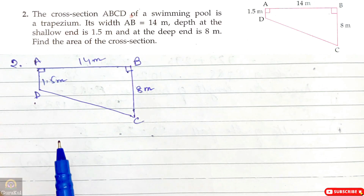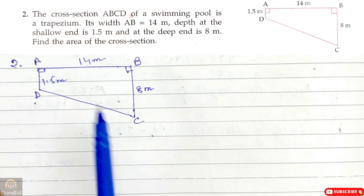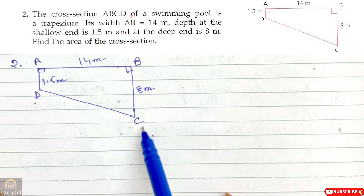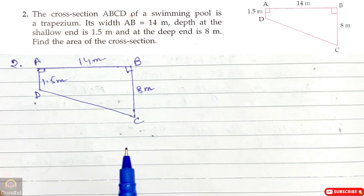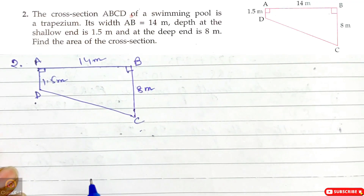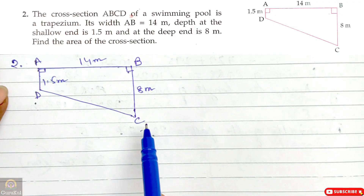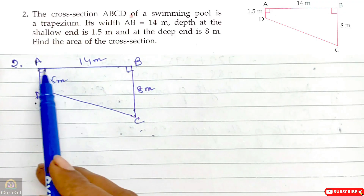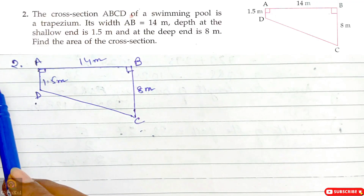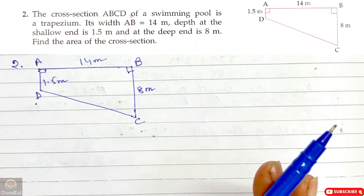In a trapezium, two sides are parallel. Here A, D and B, C are parallel. If we extend line D, C and line A, B further, they would meet at a point — so A, B and D, C are not parallel. Also, angles A and B are 90 degrees each, making them co-interior angles between A, D and B, C. The sum of co-interior angles between two parallel lines is always 180 degrees, and 90 plus 90 equals 180. Therefore A, D and B, C are parallel.